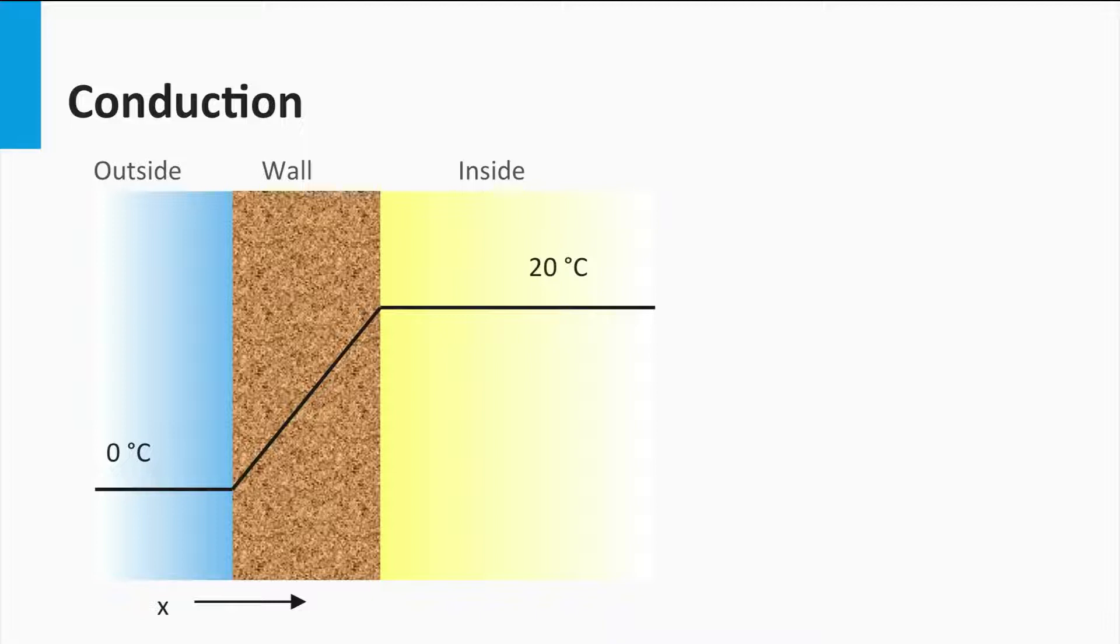Conduction is the transfer of heat in a medium due to a temperature gradient. So, let's imagine a house with a heating system during winter. The inside of the house is warm, but the outside is cold. Then a gradient between the inside and the outside is established and therefore there will be conduction of heat through the house walls.